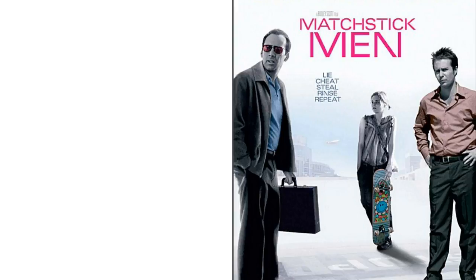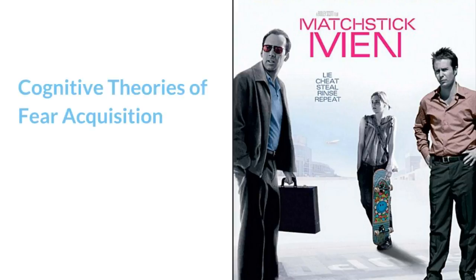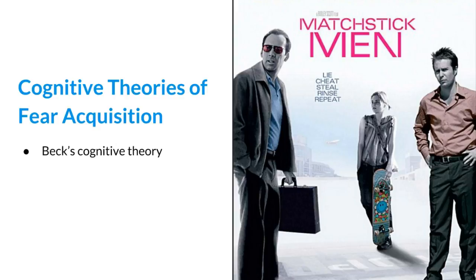The third specific cause is related to cognitive theories of fear acquisition. Recall that the cognitive perspective views abnormal behavior as a result of distorted cognitions, or distorted ways of thinking. Aaron T. Beck's cognitive theory focuses on automatic negative thoughts. He hypothesized that anxiety is a result of maladaptive thoughts of an ambiguous situation being automatically interpreted in a negative way.